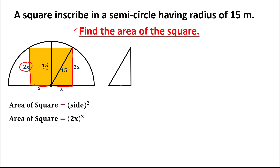This side is equal to x, this side is 2x, and this side is equal to 15. Since this is a right triangle, we can use the Pythagorean theorem. And 15 is the hypotenuse. So we have: hypotenuse squared equals (2x)² plus x².